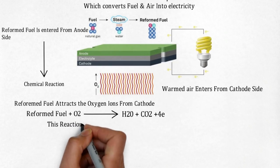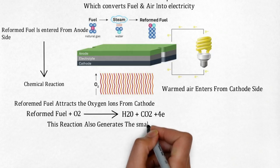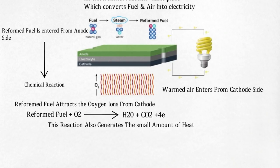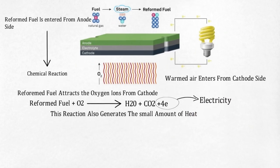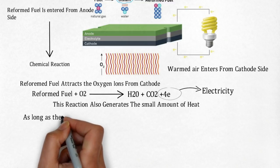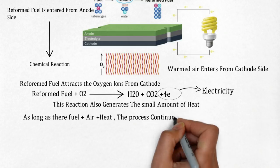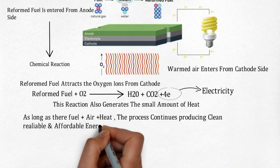This reaction also generates a small amount of heat. Those four electrons - the flow of electrons - generates the electricity. This is how the electricity gets formed. As long as there are fuel, heat, and air, the process continues producing clean, reliable, and affordable energy. This is how a solid oxide fuel cell works.